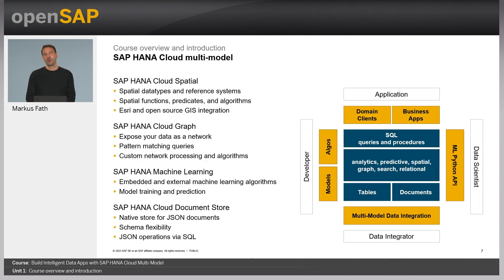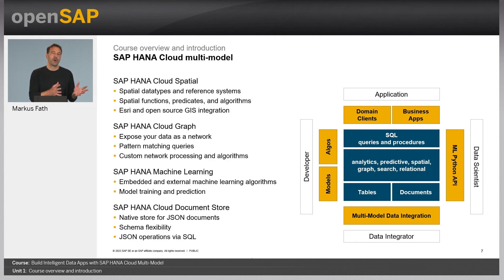Looking at the multi-model capabilities specifically, we will mainly focus on four: spatial, graph, machine learning, and the JSON document store. We offer APIs and tools for different personas to work with these multi-model capabilities — be it a developer or full-stack developer working with a database layer, or a data scientist working in a Python environment and running machine learning algorithms.